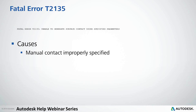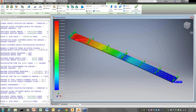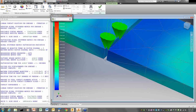T2135, unable to generate surface contact using specified parameters — we already saw that one. It occurs when doing manual or automatic contact and your gap is too large for the specified tolerance. I can measure the gap using Tools and find this gap is about 0.07 inches.